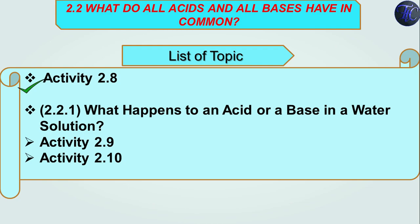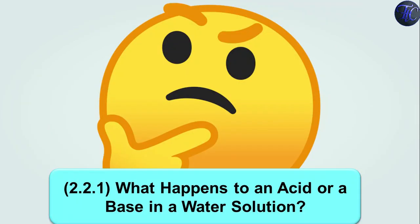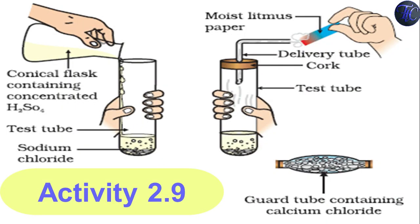These are the list of topics which we are going to learn. I had already completed 2.8. To watch this, click the i button. Today we are going to learn section 2.2.1 and activity 2.9. The question arises in our mind is what happens to an acid or a base in a water solution. Let us learn it with the help of activity 2.9.